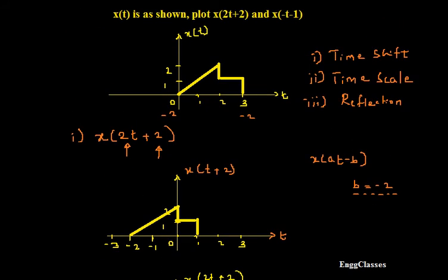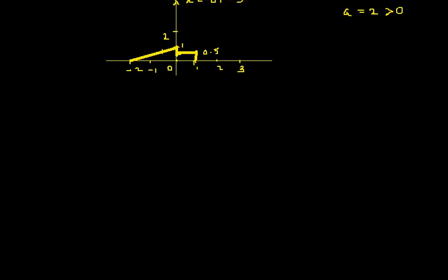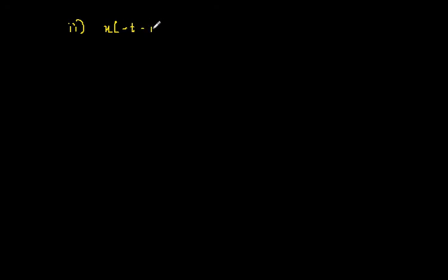Now let me consider sketching x of minus t minus 1. Looking at this signal, if I compare with x of at minus b, there is a reflection and there is a shift. I will do the shift first and later reflect it. The shift here: b is equal to 1, so I need to shift the signal to the right by 1.